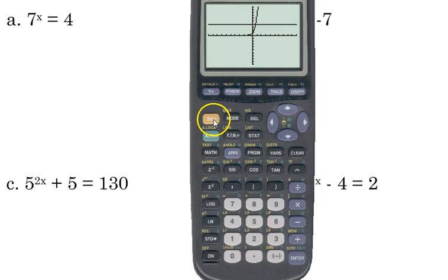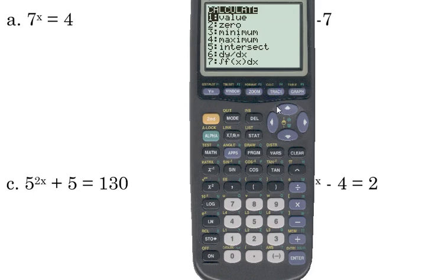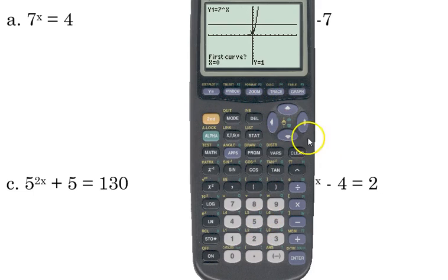So, intersect, in case you've forgotten, is second trace. Intersect is number 5. Guess what? The nice thing about intersect, you really don't have to do anything. You just press enter three times. And here's the answer.